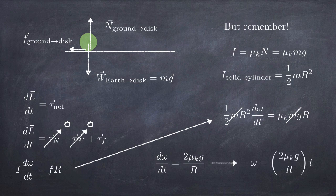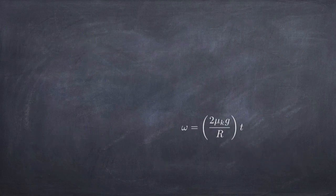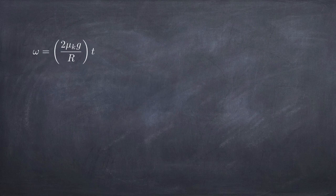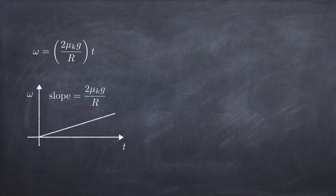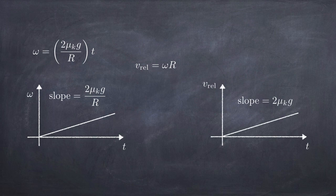Substituting everything in, the masses cancel again and we get d_omega/dt = 2 mu_k g / r. Since omega starts at zero, omega increases linearly with time. Graphing omega versus time gives a linearly increasing curve with constant slope. The speed of a point on the rim relative to the center of mass is omega times r, and multiplying through by r gives that speed increasing with a constant slope of 2 mu_k times g.